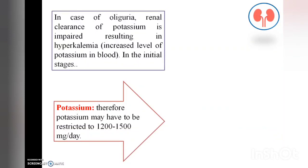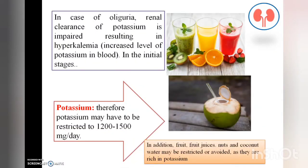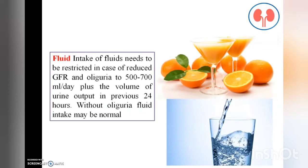Coming to potassium: in cases of oliguria, renal clearance of potassium is impaired, resulting in hyperkalemia, which is an increased level of potassium in the blood. In the initial stages, potassium can be reduced to 1200 to 1500 milligrams per day. Fruit juices and tender coconut water should be avoided. Fluid intake should be 500 to 700 ml per day plus the volume of urine output in the previous 24 hours. Without oliguria, fluid intake may be at a normal level.